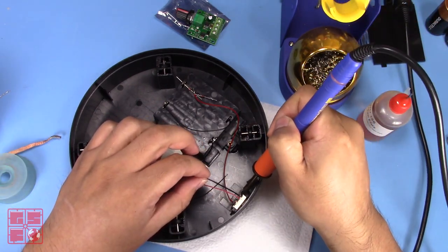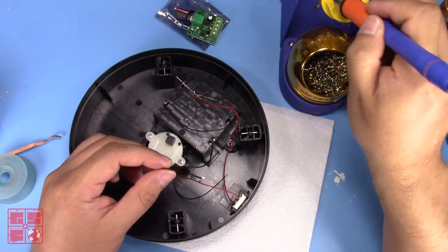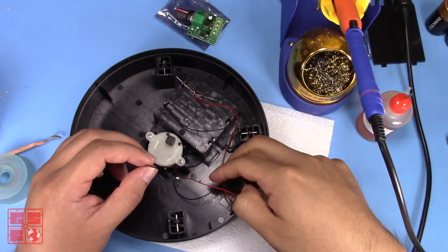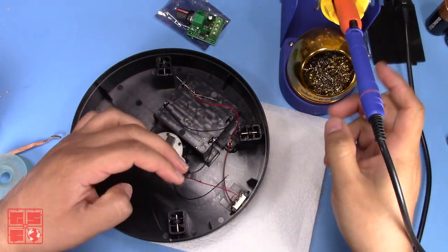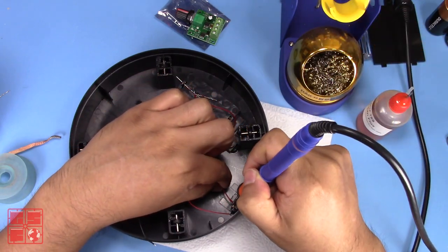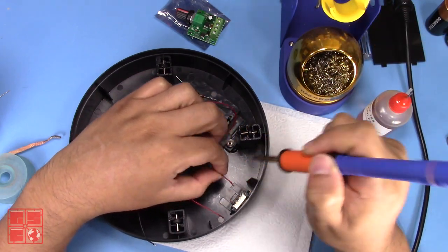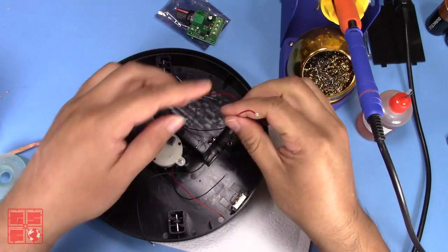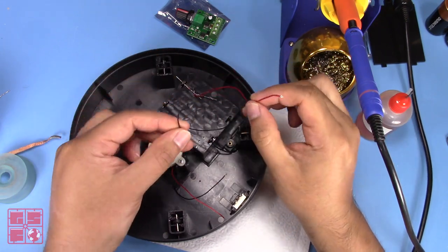Now I gotta remove this lead from the switch and that frees up the negative lead on the battery box. And I also gotta desolder the positive lead from the old switch and that will free up the positive lead on the battery box.